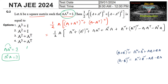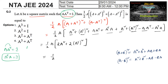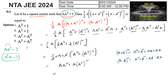Substituting, we have half into A into 2A square plus 2 times A transpose whole square, since the A into A transpose and A transpose into A terms cancel each other out. Taking 2 as common, this becomes A times (A square plus A transpose whole square), which expands to A into A square plus A into A transpose whole square, that is A into A square plus A into A transpose into A transpose.